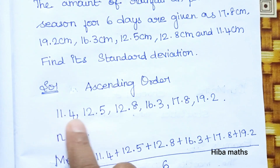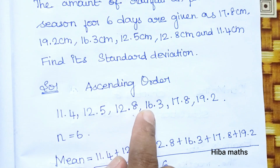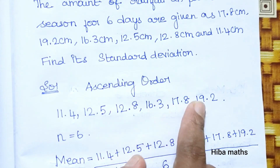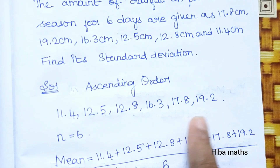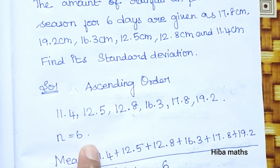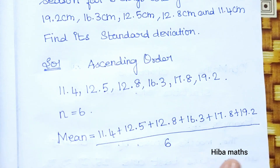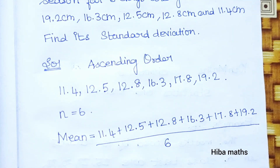First, we arrange the values in ascending order: 11.4, 12.5, 12.8, 16.3, 17.8, 19.2. The number of observations n is 6.